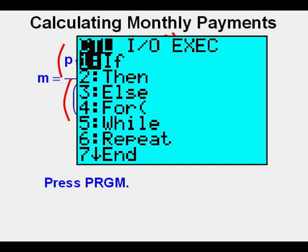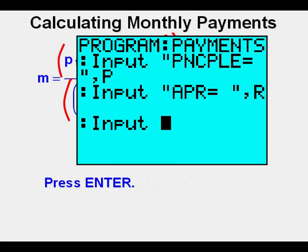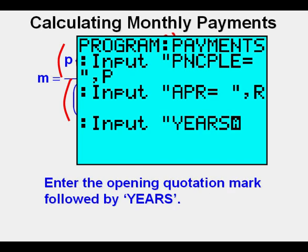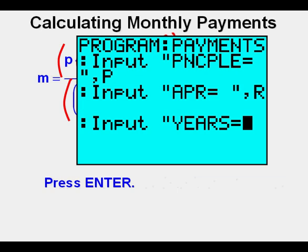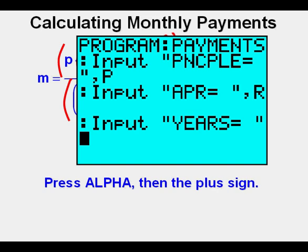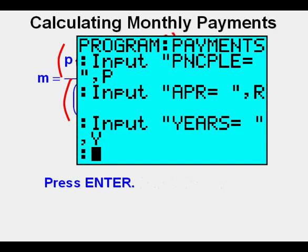To start the third line of code, press the program key. Arrow once to the right to the input-output submenu. Press enter. Prepare to enter a string of characters by entering second, then alpha. Enter the opening quotation mark followed by YEARS. Go to the test menu by pressing second, then the math key. Press enter. Create a blank space by pressing alpha then the zero key. Make a closing quotation mark by pressing the alpha key, then the plus sign on the right of the keypad. Press the comma key above the seven key. Enter Y by pressing alpha, then the one key. Press enter. Now we have put in three lines of code that give us the inputs.